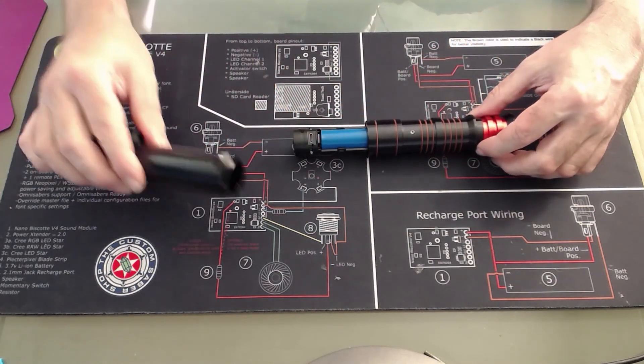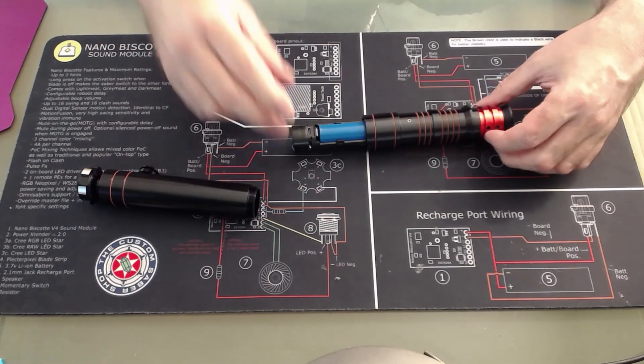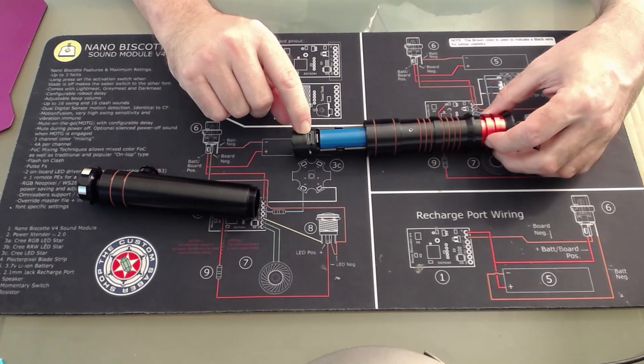Once you've removed the body of your saber, roll it over and you'll find the USB-C charging port just there.